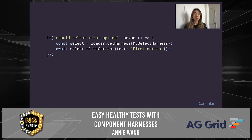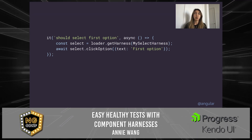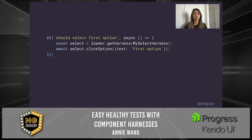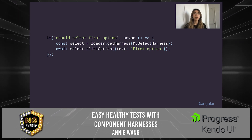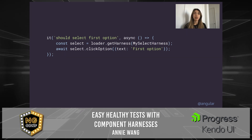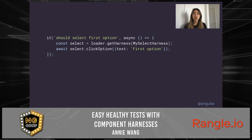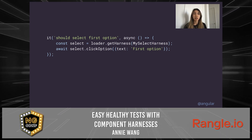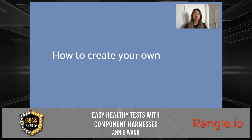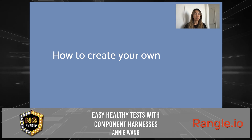This is what the test would look like using component harnesses. You would get the harness through the loader, and then select the option through a clickOption method that lets you filter options by text — something more visible instead of a class name. Right off the bat, it's a lot easier to read. We're not dealing with specific selectors or class names, and harnesses can abstract away common interaction steps like opening a trigger and selecting an option. Most importantly, we're not interacting with the DOM, so if any internal changes happen for an optimization, it won't affect people's tests.